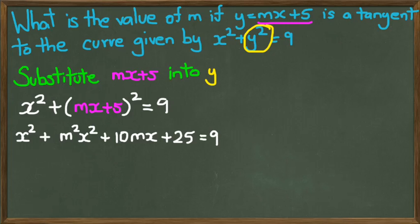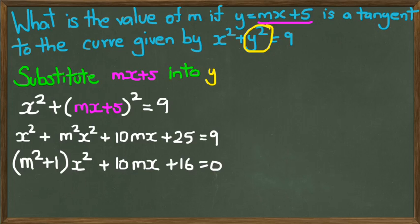Ideally, we would want to rearrange this and bring all your common terms together. So we're going to get m squared plus 1, which is multiplied by x squared, plus 10mx and plus 16 equals 0.